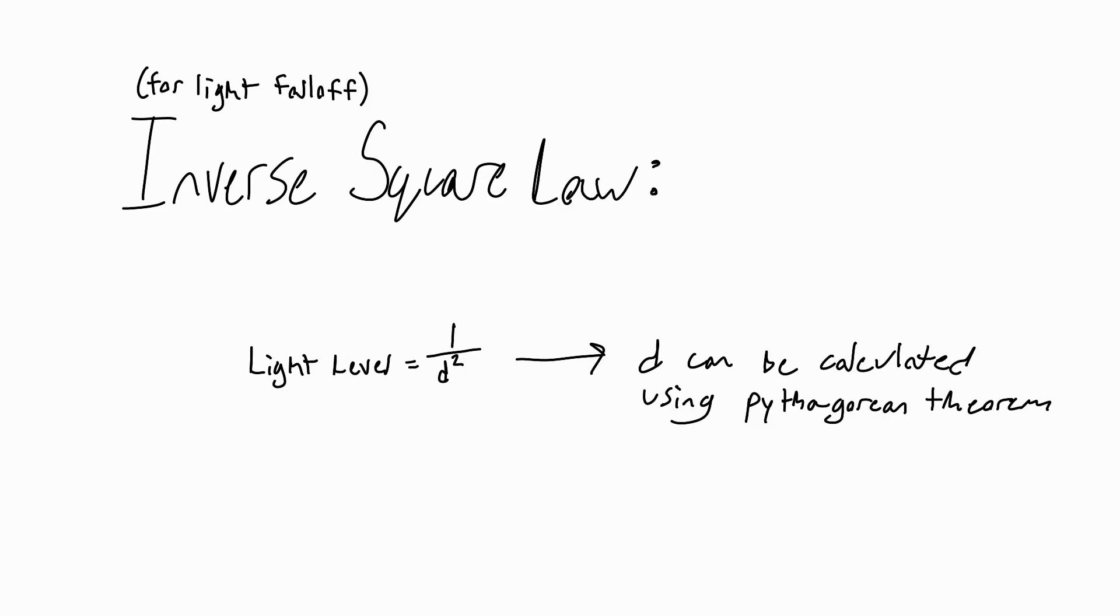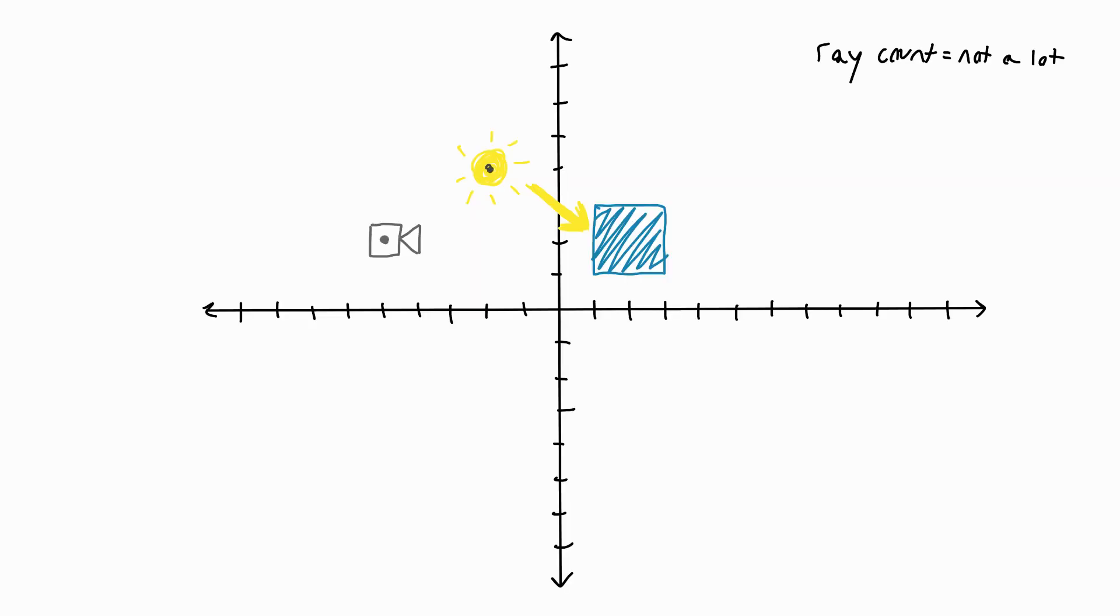This light falloff can be calculated using what is called the inverse square law, where the light level per unit area is equal to the inverse of the distance the ray travels squared. To get the lightness of these points in our square, we can use the Pythagorean theorem to get the distance it takes for each ray to travel, and then plug that distance into the inverse square formula. Now we have a value on a 0 to 1 scale that tells us the percentage of light that will be on that point.